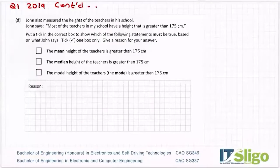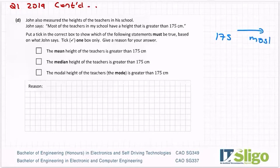John also measured the heights of the teachers in the school. John says most of the teachers in my school have a height that is greater than 175 centimeters. Put a tick in the correct box to show which of the following statements must be true based on what John says. Tick one box only. Give a reason for your answer. Most of the teachers in my school have a height that is greater than 175. So there's 175, and most of the teachers are bigger. Most.